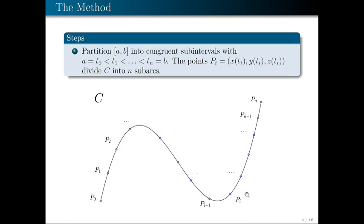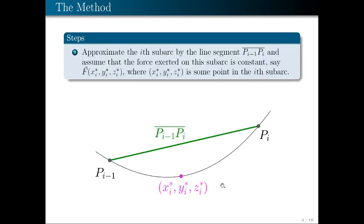Next, we consider the i-th subarc. We look at the subarc with initial point P_{i-1} and terminal point P_i. We approximate the work done by F on this subarc by assuming a constant force. We choose an arbitrary point on that subarc—(x_i*, y_i*, z_i*)—and F at this point will be the force along this subarc.